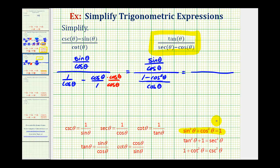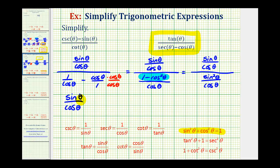This time, if we subtract cosine squared on both sides, we get sine squared theta equals one minus cosine squared theta. So we can substitute sine squared theta for one minus cosine squared theta. Our denominator is now sine squared theta over cosine theta. Let's skip writing the division problem and go straight to the multiplication form. This is sine theta over cosine theta divided by sine squared theta over cosine theta, which as a multiplication problem means the first fraction stays the same, and we multiply by the reciprocal: cosine theta over sine squared theta.